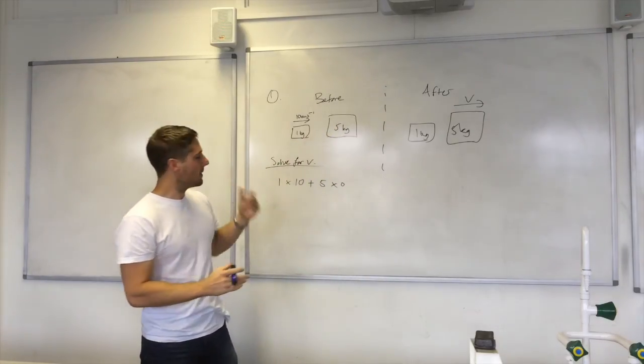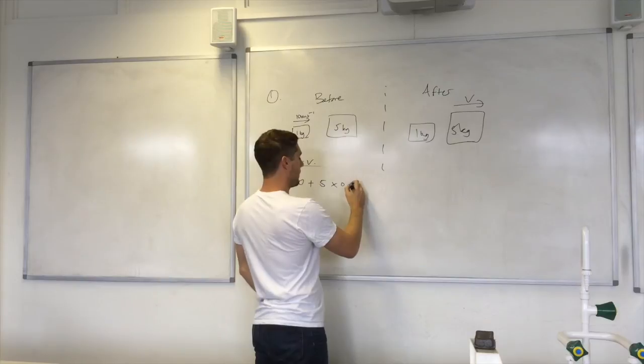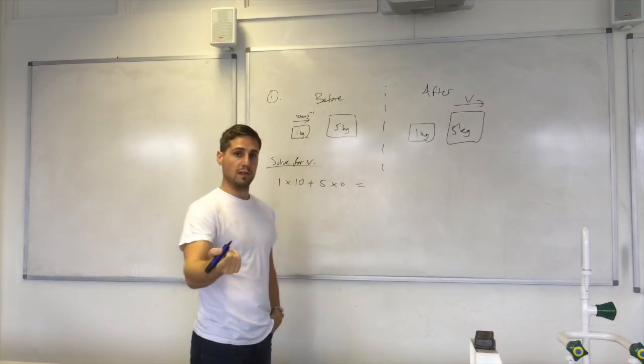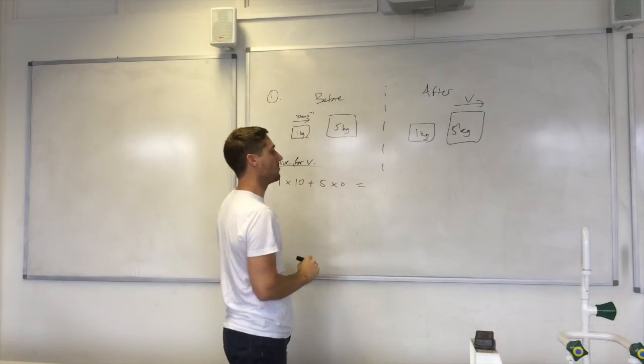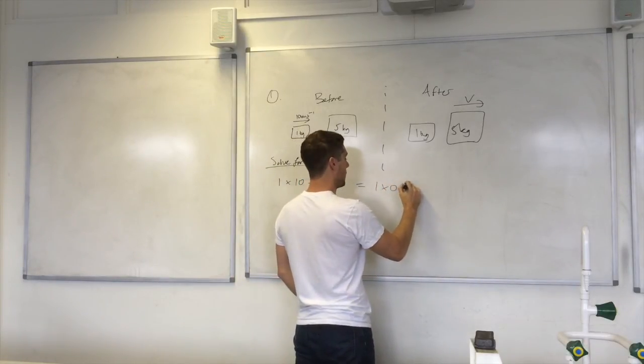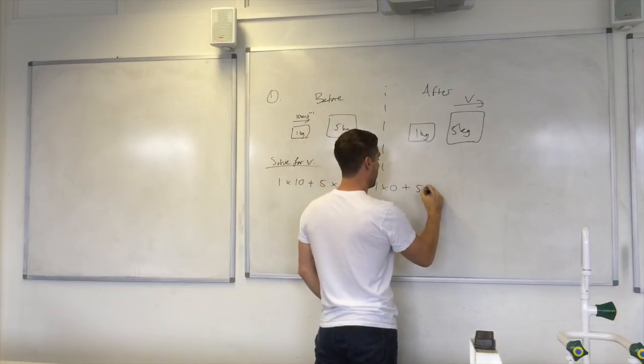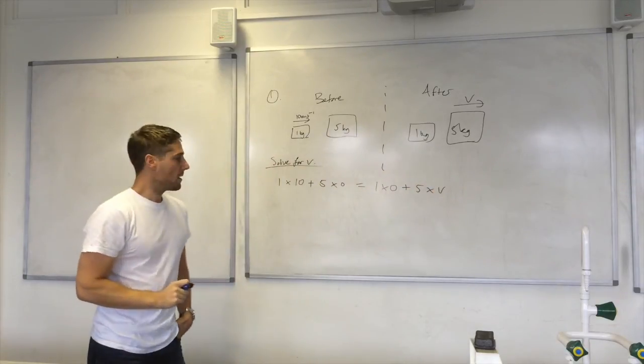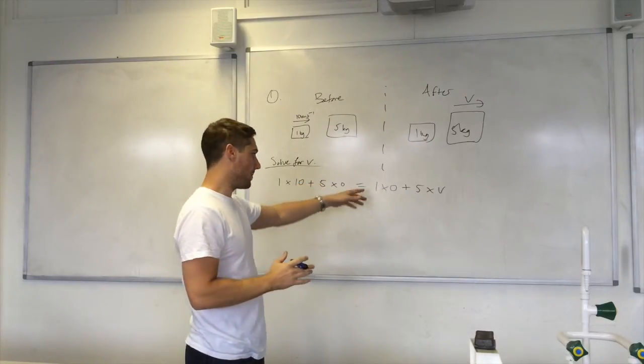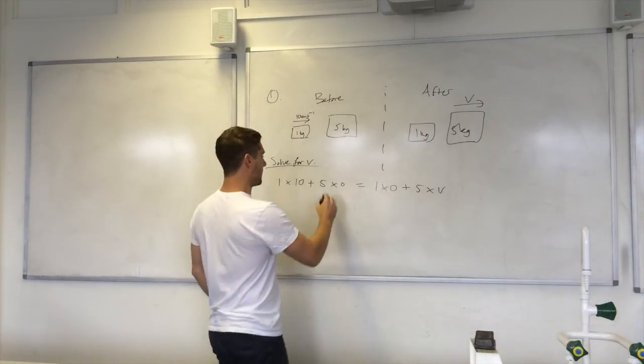That has zero velocity. That's the total momentum before. And we know that the total momentum before is equal to the total momentum after from our principle. So that should be equal to one times zero plus five times v.